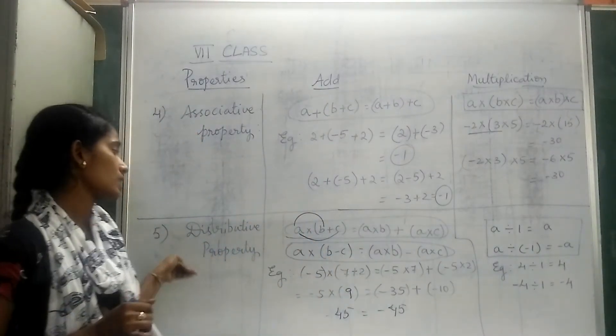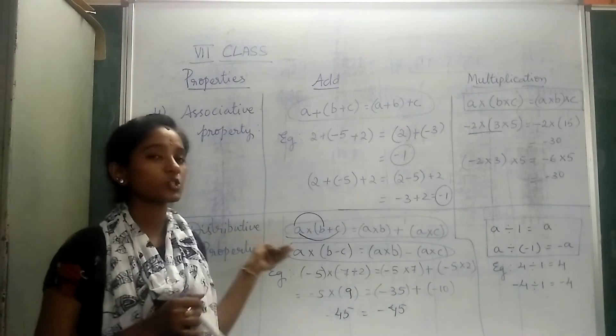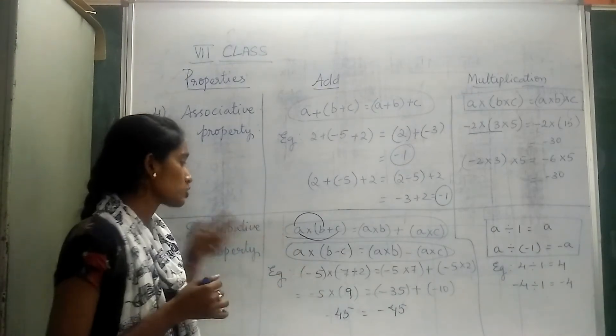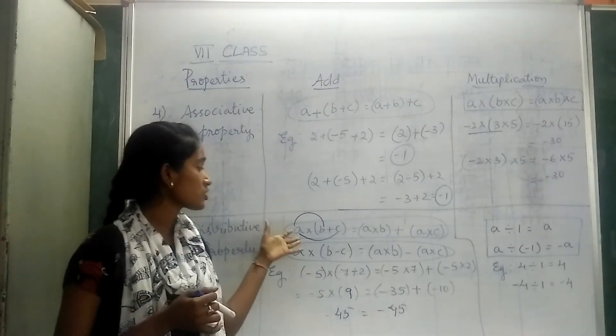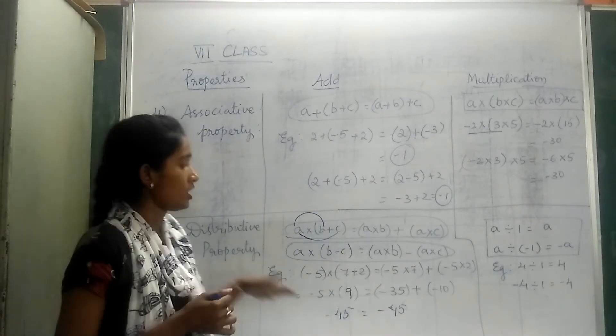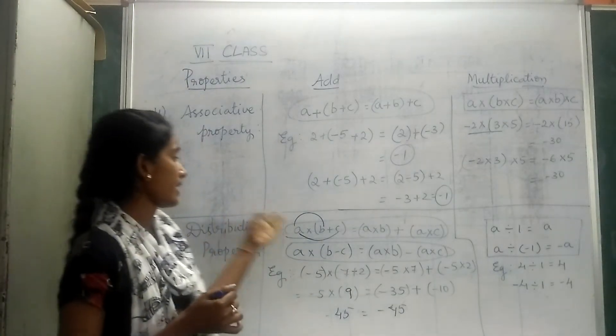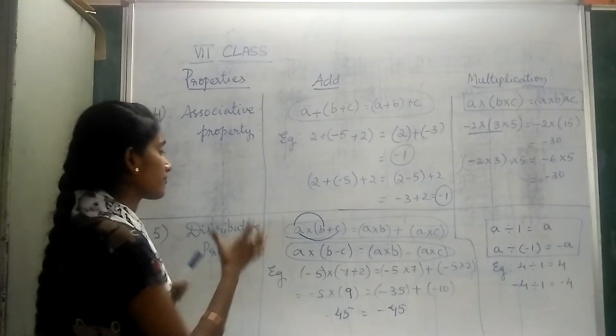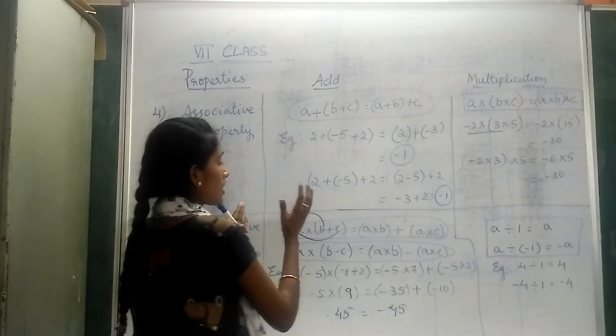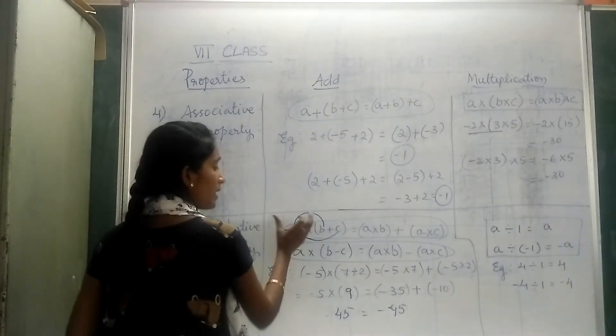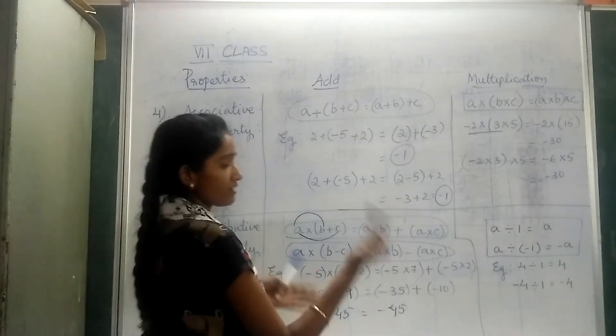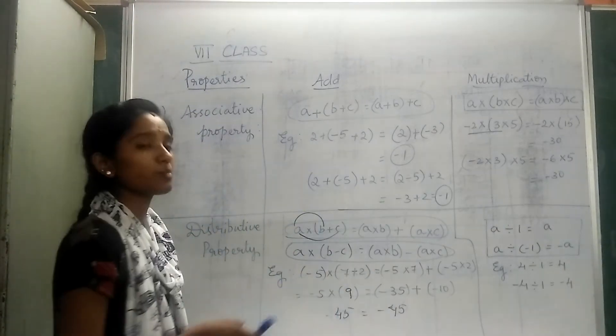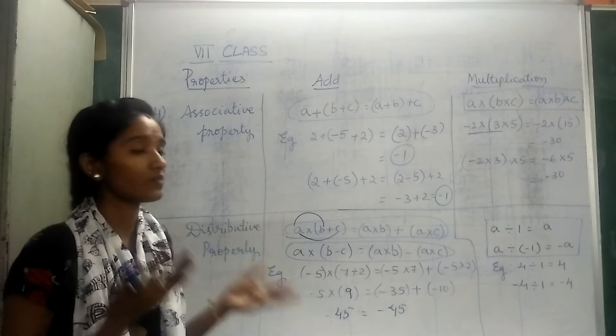Now, coming to distributive property. Distributive property satisfies both operations together: addition and multiplication. When you go here, a × (b + c), we either use it either way. If I multiply one time and the other time. The example I will explain to you so that you will understand very clearly.